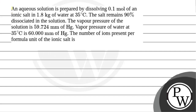Hello students, let us see the question. An aqueous solution is prepared by dissolving 0.1 mole of an ionic salt in 1.8 grams of water at 35 degrees Celsius. The salt remains 90% dissociated in the solution. The vapor pressure of the solution is 59.724 mm of Hg. Vapor pressure of water at 35 degrees Celsius is 60 mm of Hg. The number of ions present per formula unit of the ionic salt is?